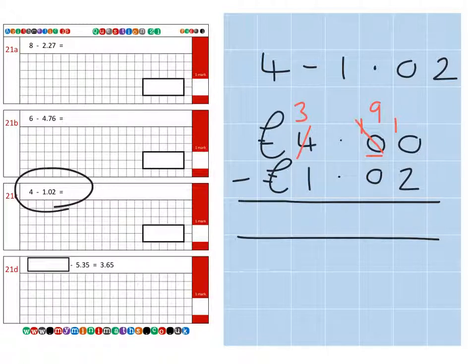So then we have ten subtract two hundredths which is eight hundredths. Nine tenths minus zero tenths which is nine tenths. Don't forget that decimal point. And then we have three units minus one unit which is two units. So for this question it would be in money, but for the question on the original arithmetic sheet it would be 2.98.